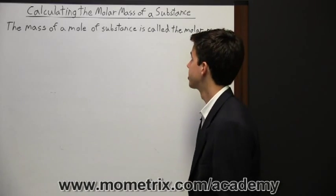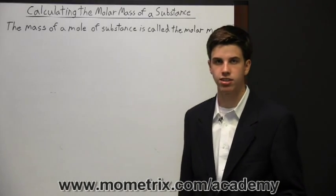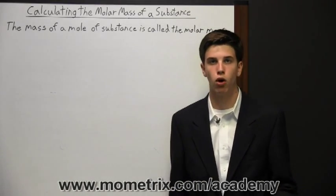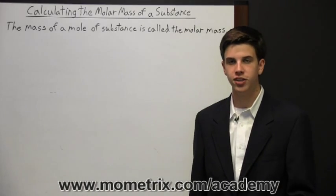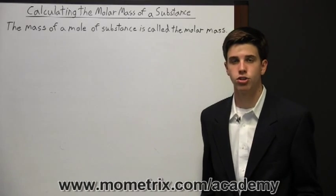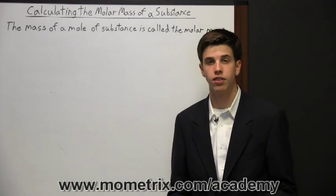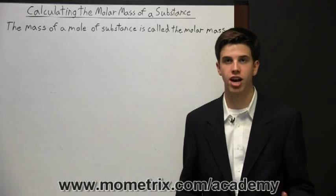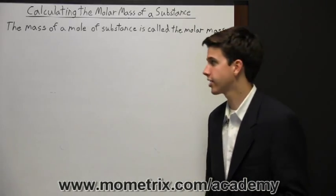The mass of a mole of substance is called the molar mass. And to calculate the molar mass of a substance, you need a periodic table and the chemical formula. So if you're trying to find the molar mass of an element, then you'll take the average atomic mass listed in the periodic table.